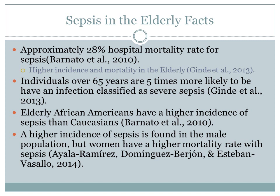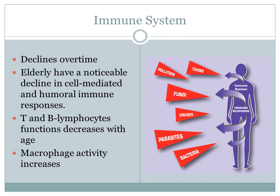Did you know that approximately 28% of hospital mortality rate is because of sepsis? And that the incidence of mortality is highest among the elderly? Individuals over 65 years are five times more likely to have an infection classified as severe sepsis. Elderly African Americans have an even higher incidence of sepsis than Caucasians. A higher incidence is also found in the male population; however, women do typically have a higher mortality rate with sepsis. It is important to understand sepsis in the elderly as well as the normal physiological changes in those over the age of 65, as these changes can affect susceptibility to developing sepsis.